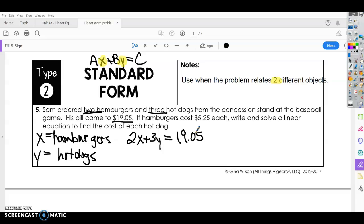Alright, so we don't know what the hamburger and the hot dogs cost, but we do know that the hamburgers cost $5.25 each, and X is our hamburger. So we can substitute $5.25 in for X plus 3Y equals $19.05. Now, like any equation, if you only have one variable, that means you can solve for that variable. So we are going to solve for Y, and in this case, our Y is our hot dogs. It says write and solve a linear equation to find the cost of each hot dog, so that's what we're trying to do.